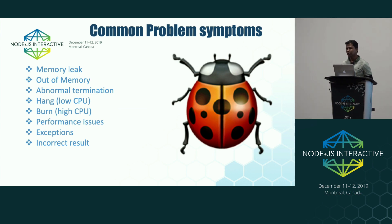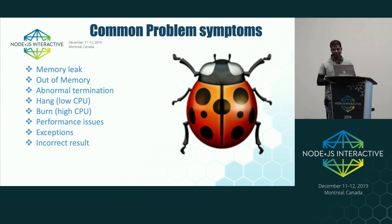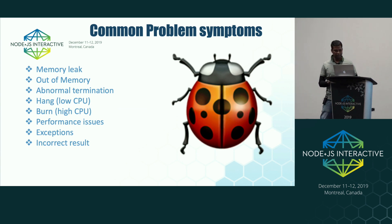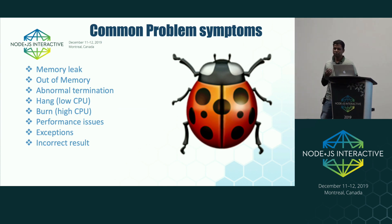Performance issues are by far the most common symptoms in large-scale productions. There are two types: one is comparing with a baseline — the current version performs badly relative to an older version of the application or an older version of the Node.js runtime. The second type is without a baseline, where you simply want to improve the application based on certain criteria or parameters.